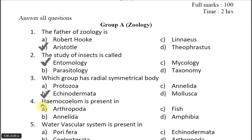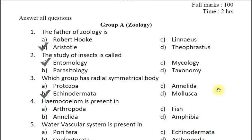Question four: Haemocoel is present in — A arthropoda, B annelida, C fish, D amphibia. The correct answer is arthropoda. It is a body cavity present in arthropoda.